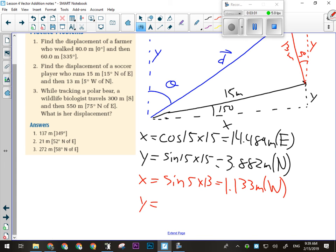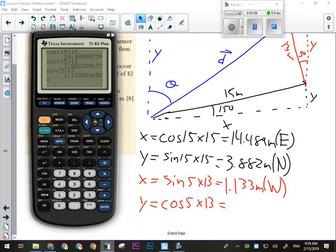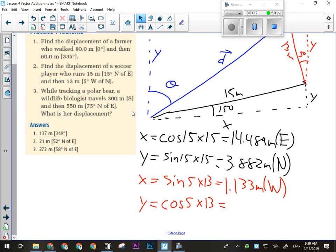And then the y component is the adjacent side, so we'll use cos for that. Cos of five degrees times 13 meters. All right, we're looking at 12.95 meters. And that is also north. All right, so now I've found all the x's and all the y's.